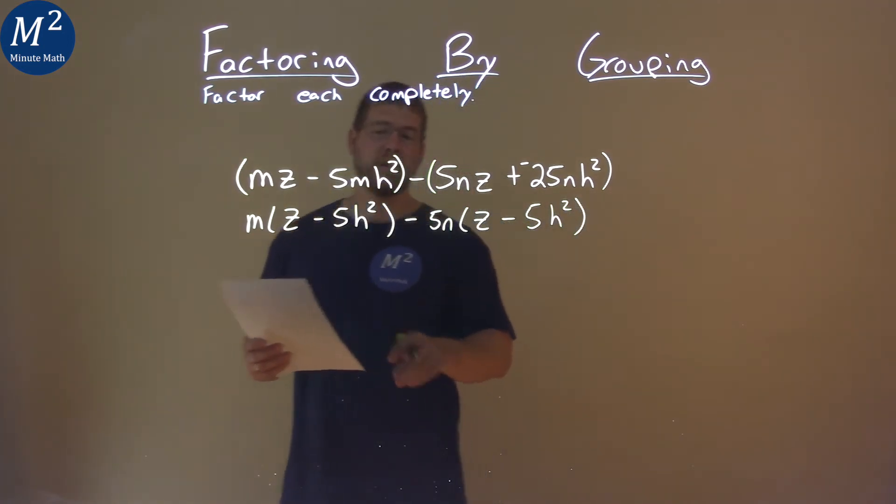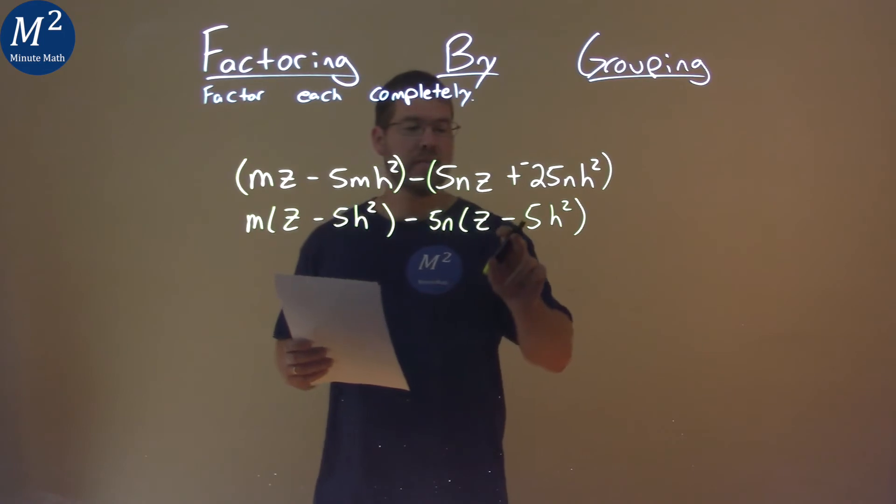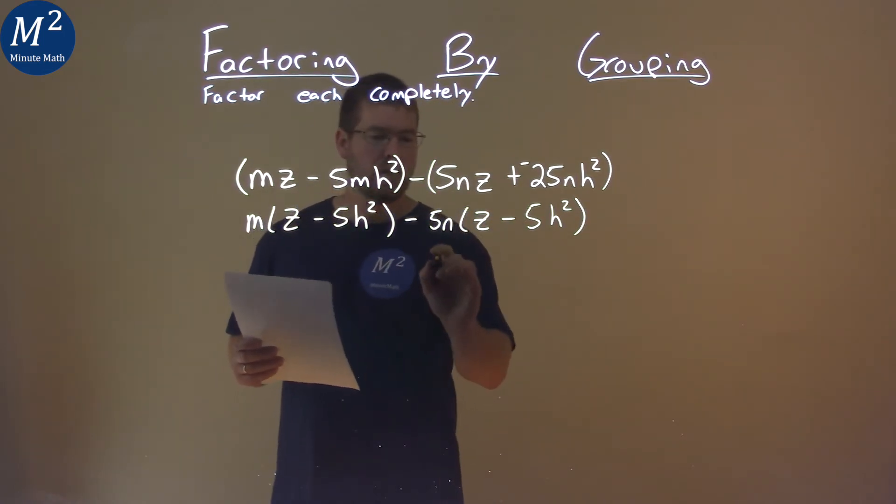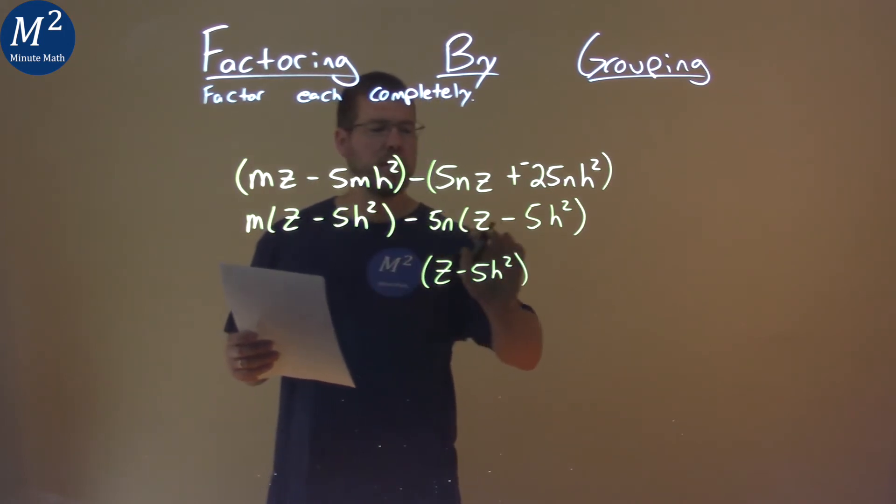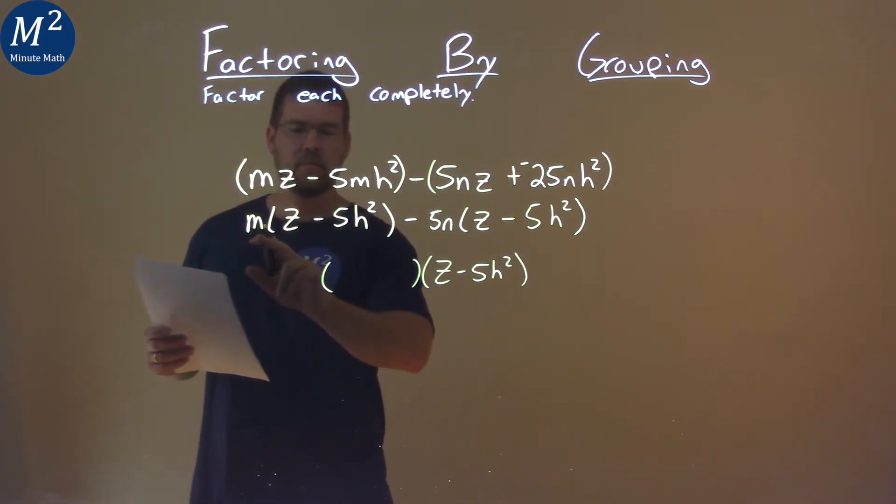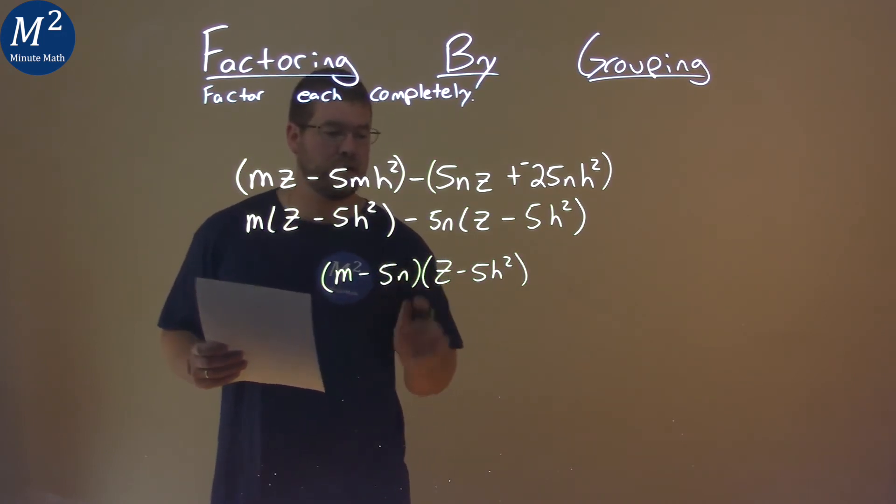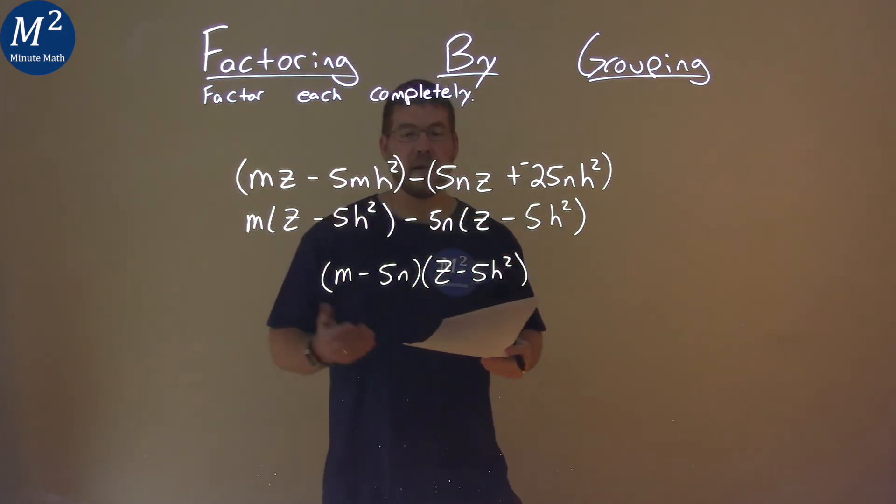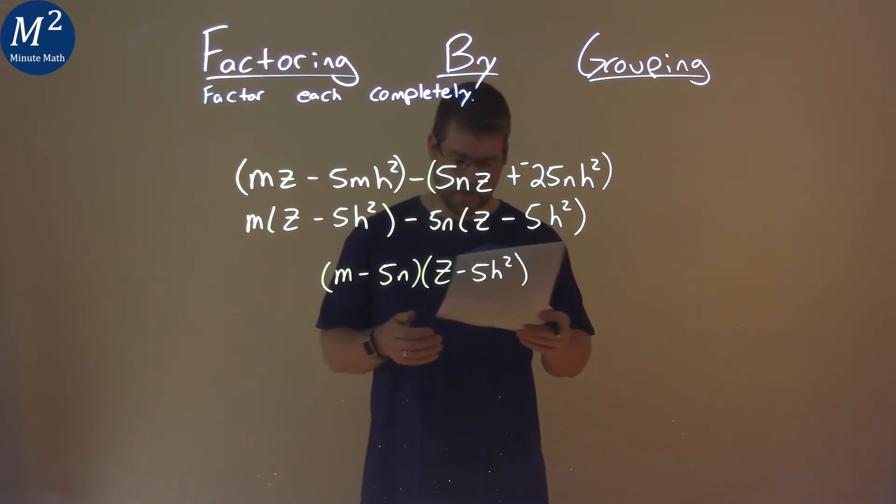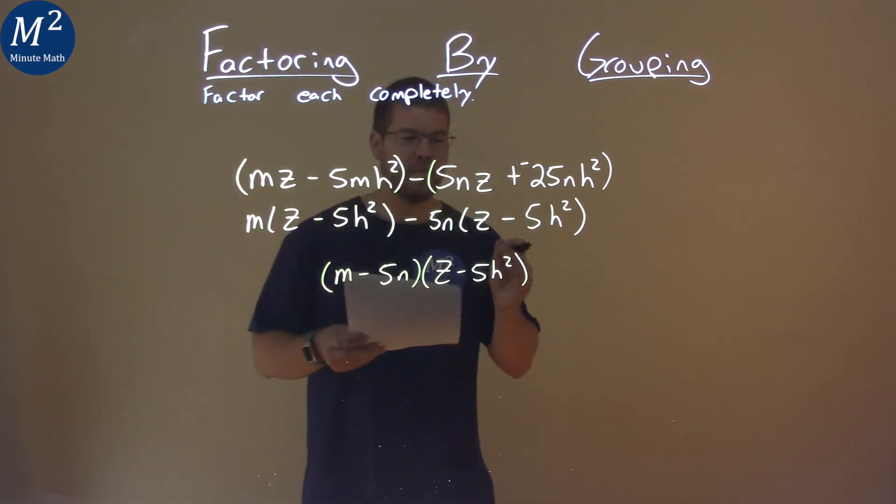That looks familiar. z minus 5h squared is in both parts now. So, I'm going to pull that out, z minus 5h squared here. By pulling that out, I'm left with what's in front of each one, an m minus 5n. And so, our final answer here is m minus 5n times z minus 5h squared.